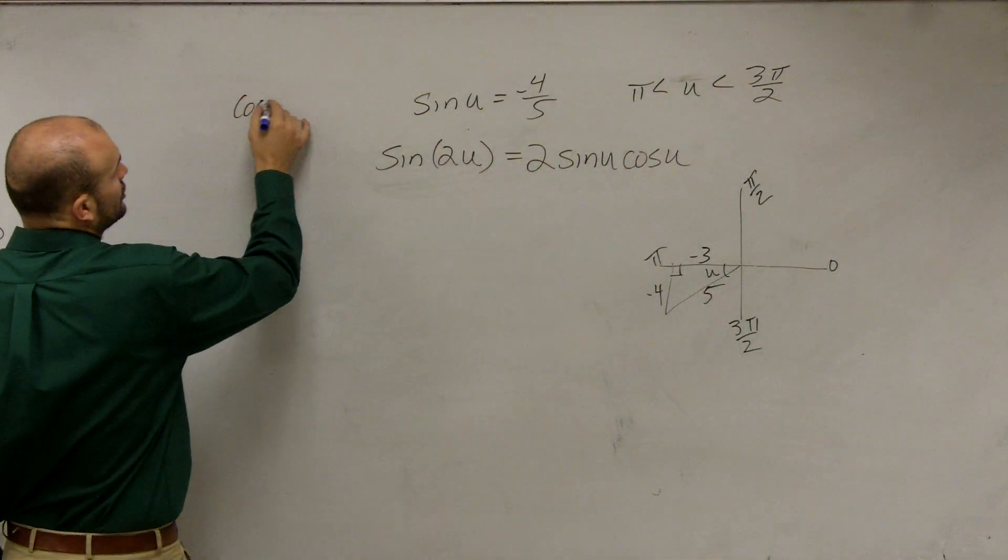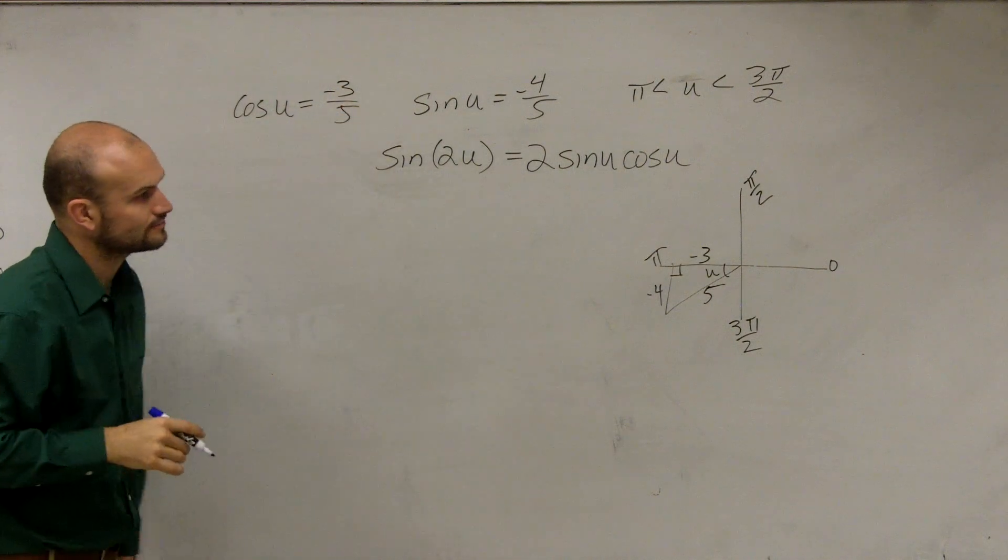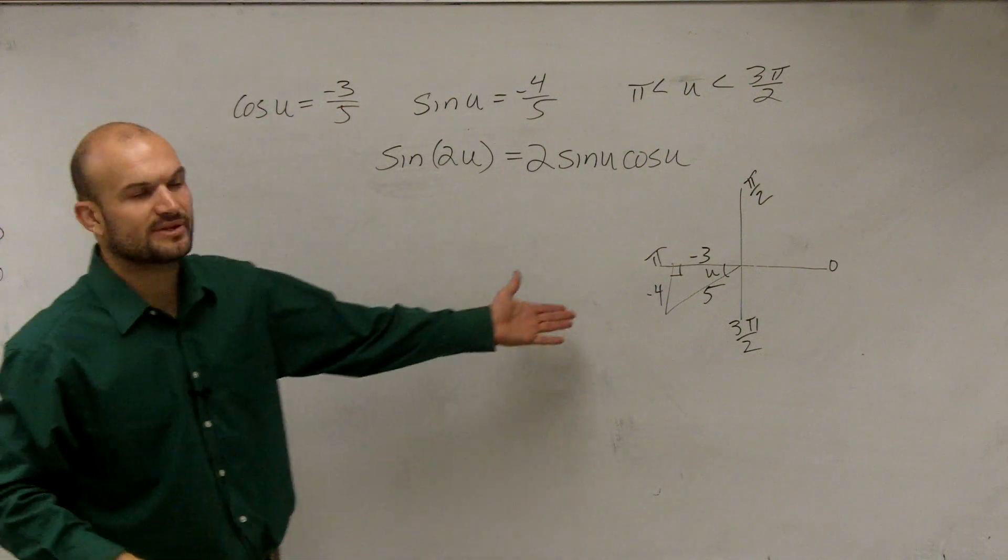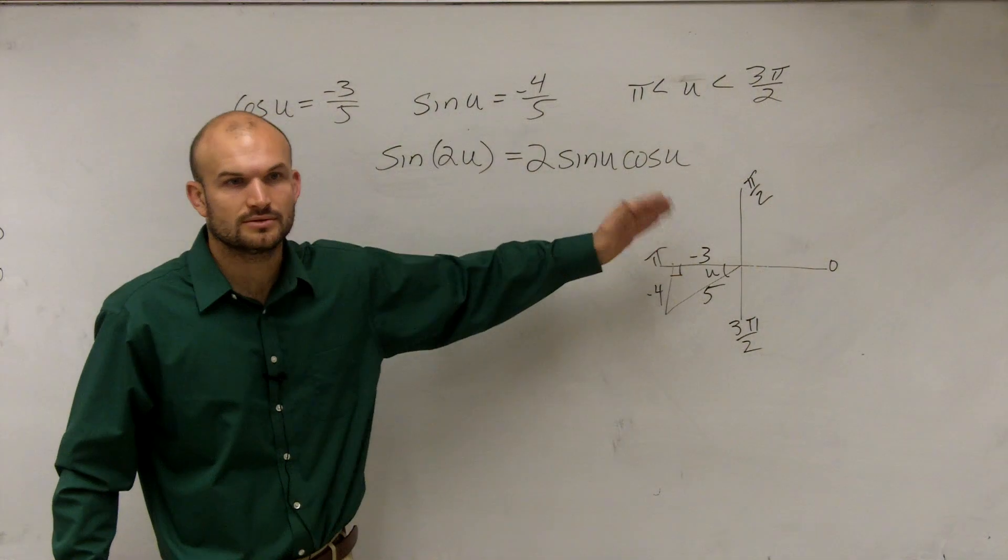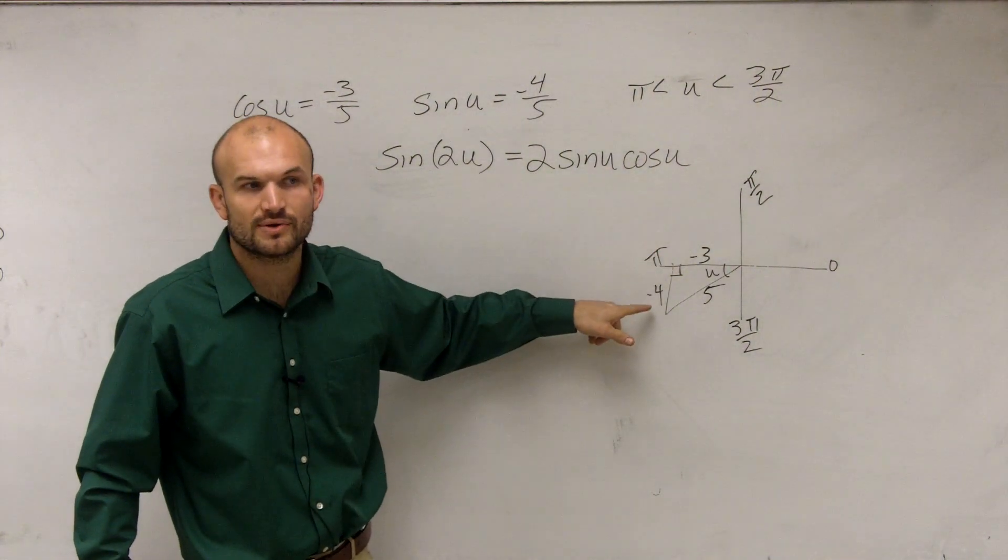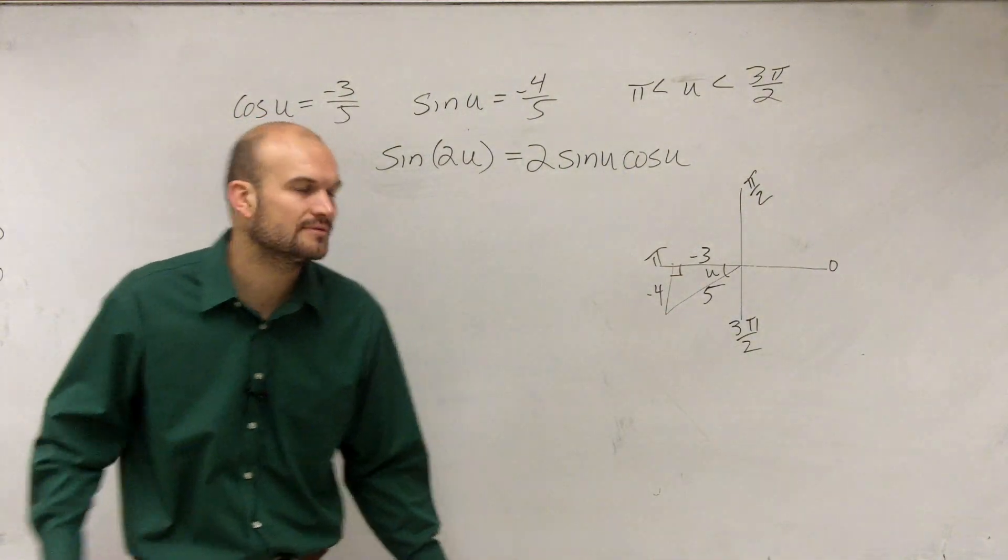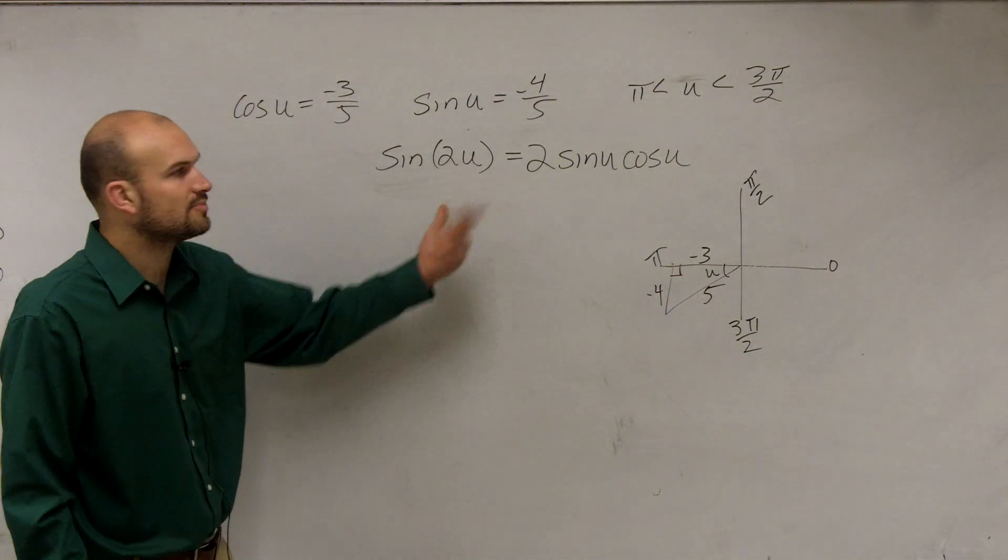So that value is going to be negative 3. So therefore, I can now just say cosine of u equals negative 3 over 5. You could use Pythagorean theorem, but it's a Pythagorean triple, a very common Pythagorean triple. 3 squared plus 4 squared equals 25. So now, you just plug them in.